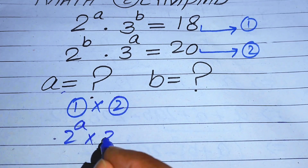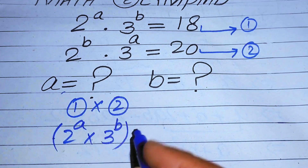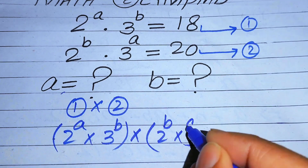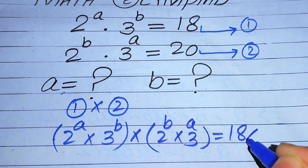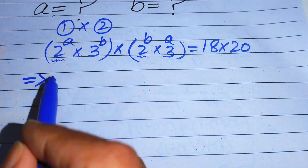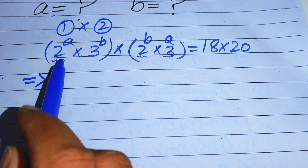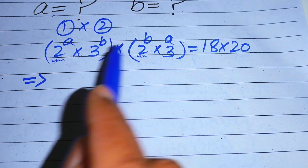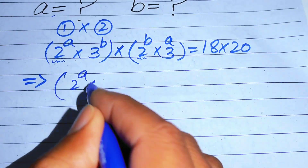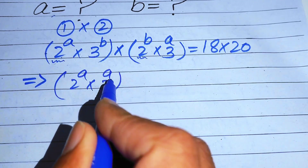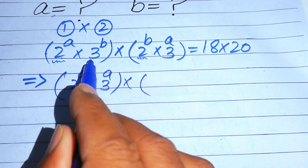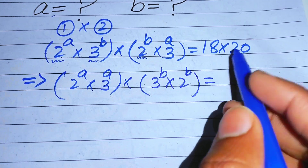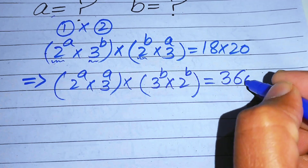The left-hand side of equation 1 is 2 to the power of a multiplied by 3 to the power of b, and we multiply it by the left-hand side of equation 2, which is 2 to the power of b multiplied by 3 to the power of a, equals 18 multiplied by 20. We combine the terms whose exponents are the same: 2 to the power of a with 2 to the power of a, and 3 to the power of b with 3 to the power of b.